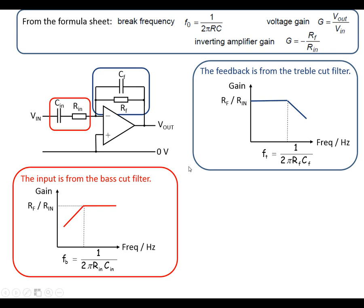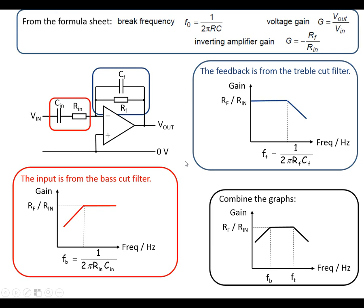We can combine these two characteristics and we end up with the bandpass characteristic. So we've got the break frequency from the bass cut and the break frequency from the treble cut, and the maximum gain being RF over RN.